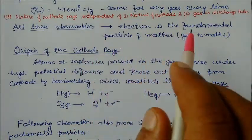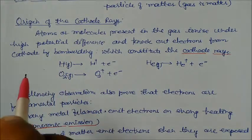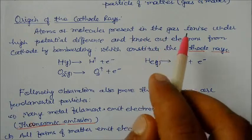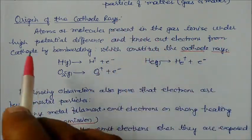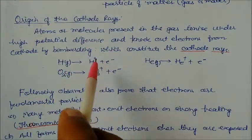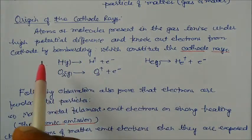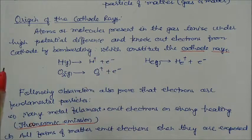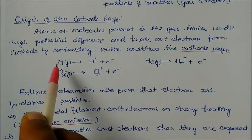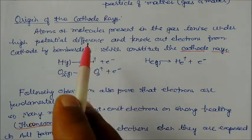The question is how cathode rays are produced. The concept is: atoms or molecules present in the gas get ionized under high potential difference. These gas molecules, present inside the discharge tube, will knock out electrons from the cathode. They strike and knock each other, constituting the cathode rays. Hydrogen gives one electron, oxygen also gives one electron and becomes O²⁺, helium also gives an electron — so electrons are generated from the cathode through ionization at high potential difference.